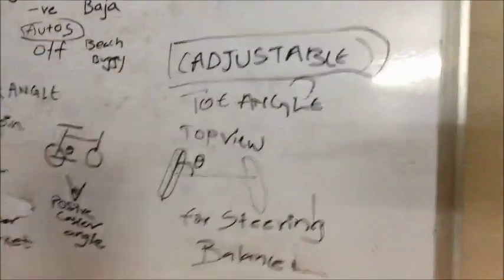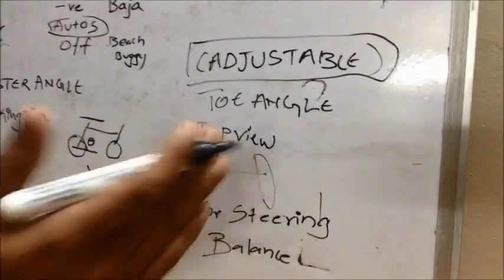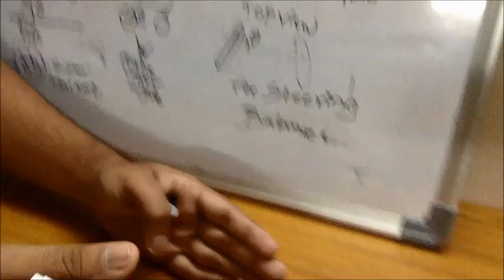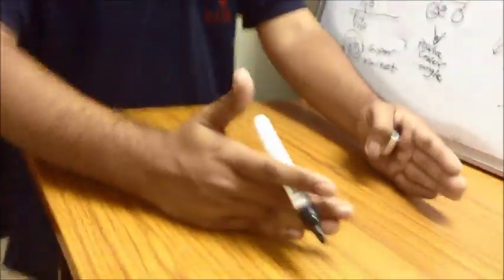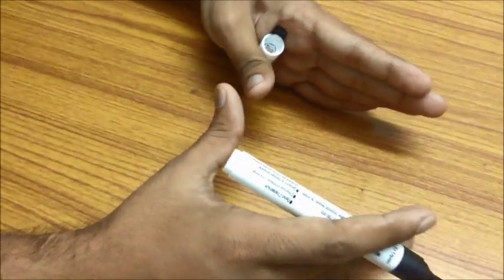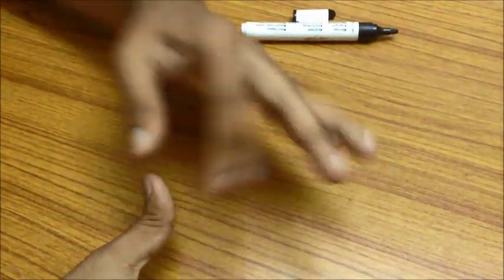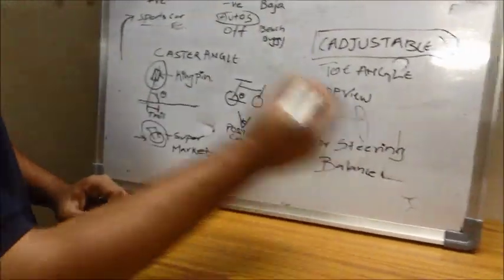This is the top view of the car tires, front tires. So these tires are making like this. I will show you. These are making an angle with the axle. So this angle is called, this is the top view of the tire. I hope you get it. This angle is called the toe angle. These angles are used for the straight line stability of the vehicle.